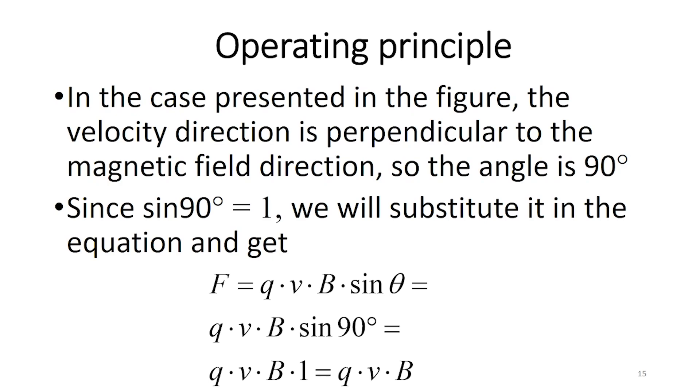In the case presented in the figure, the velocity direction is perpendicular to the magnetic field direction, so the angle is 90 degrees. Since sine 90 degrees equals 1, we will substitute it in the equation and get F equals Q times V times B times sine 90 degrees, which is Q times V times B times 1, which finally gives us Q times V times B.